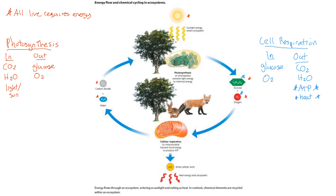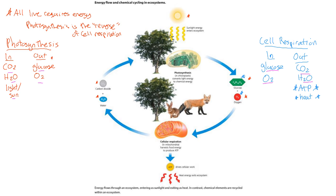Look at the photosynthesis equation. What goes in? Carbon dioxide, water, and sunlight. What do we produce? Glucose and oxygen. Now look at cell respiration. What goes in? Glucose and oxygen. What goes out? Carbon dioxide, water, and some form of energy. Another way to see this is just the reverse. The products of photosynthesis are the reactants of cell respiration, and the products of cell respiration are going to be the reactants for photosynthesis.